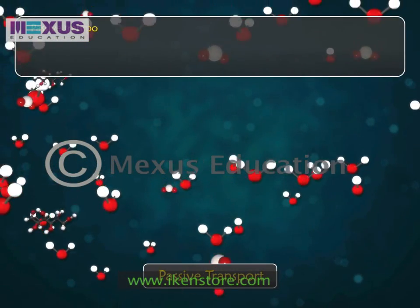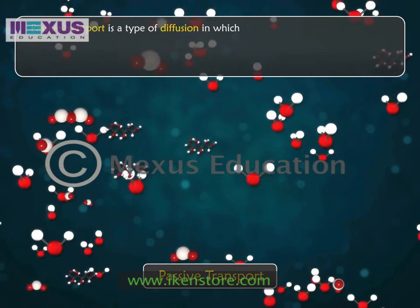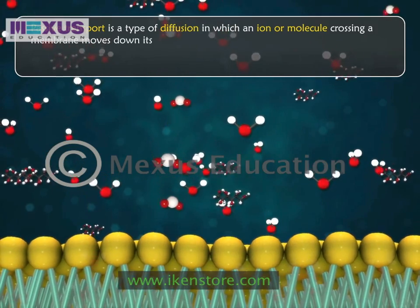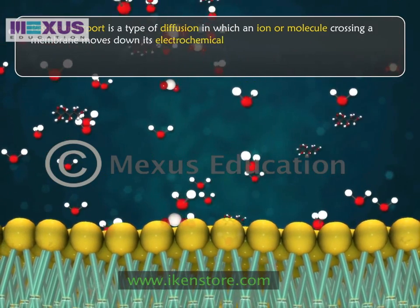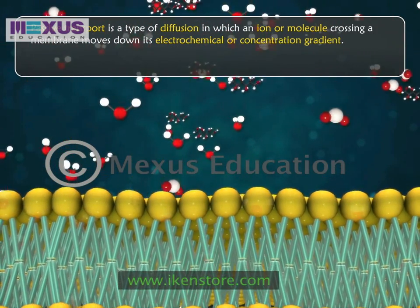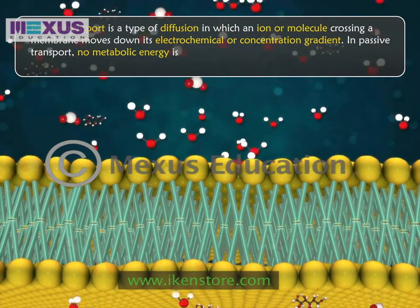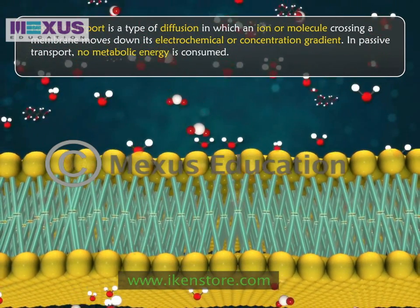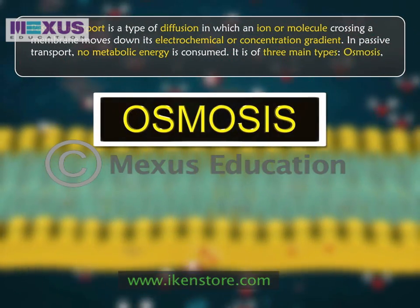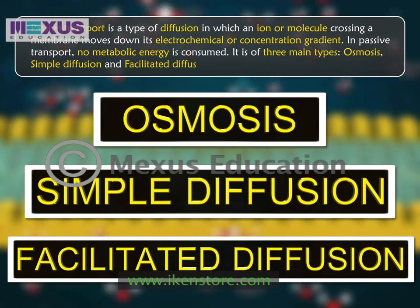Passive transport is the type of diffusion in which an ion or a molecule crossing a membrane moves down its electrochemical or concentration gradient. In passive transport, no metabolic energy is consumed. It is of three main types: osmosis, simple diffusion, and facilitated diffusion.